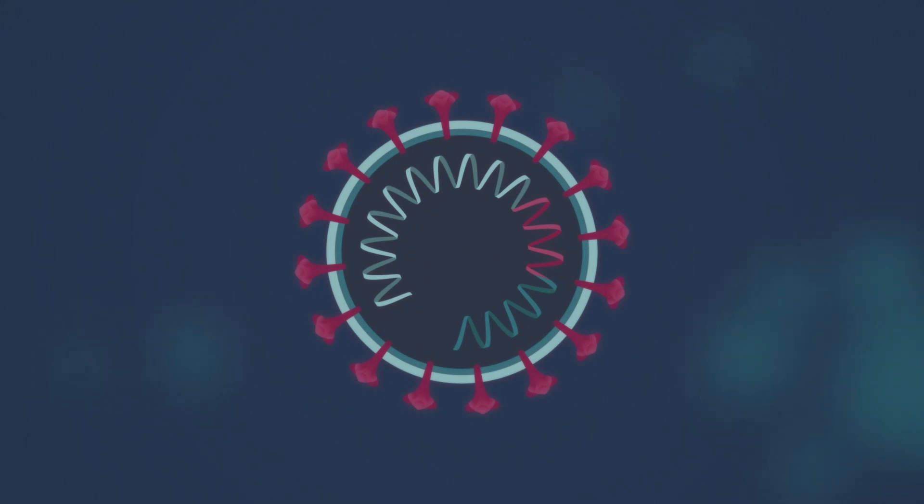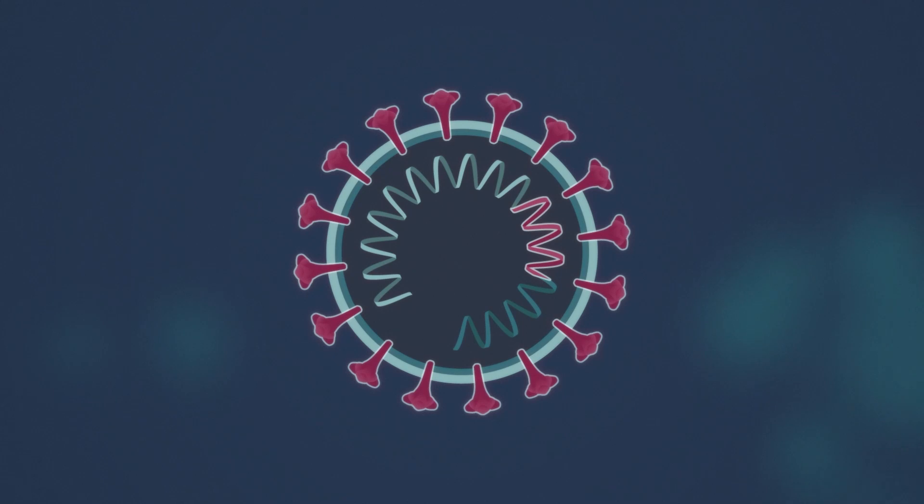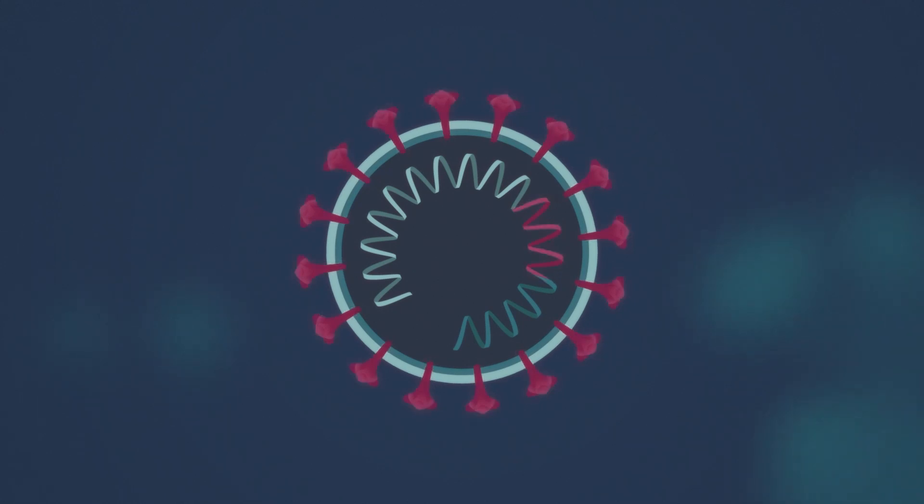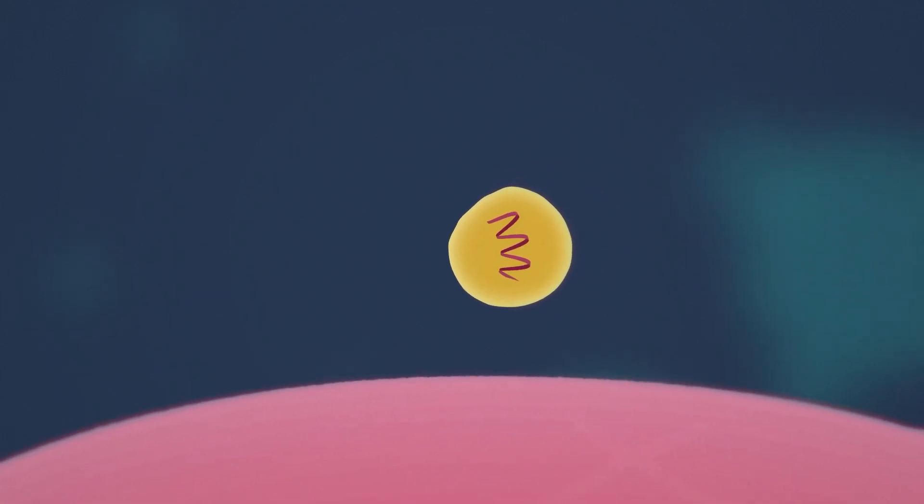This type of vaccine removes just the part of the RNA responsible for the spike proteins and wraps it in a protective oily casing. It is then injected into us and the RNA enters a human cell.